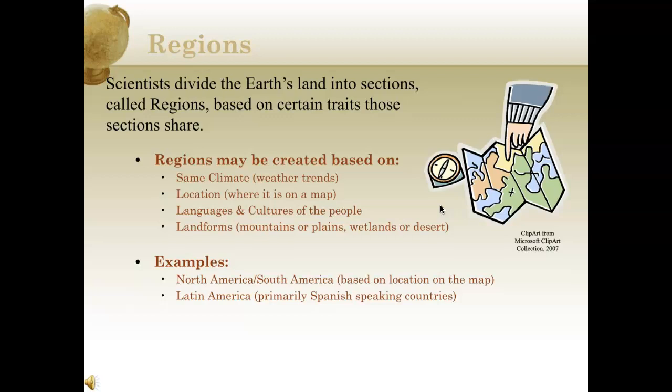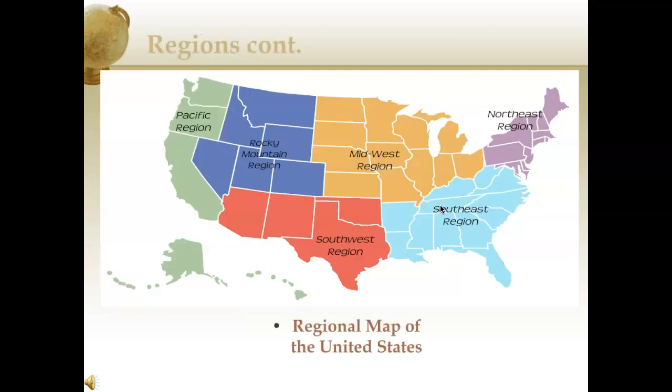For example, North and South America are based on location on the map. Latin America is an iconic region — it's primarily Spanish-speaking countries located between North and South America. When we use regions to describe where we're talking about, we're pinpointing broad areas that also have unique and specific characteristics exclusively to them. In the United States you might have heard of the Northeast, Southeast, Midwest, Southwest, Rocky Mountain region, and the Pacific region. Similarly, when I say Southeast Asia, you might think of places like Thailand, Vietnam, Laos, and Cambodia.